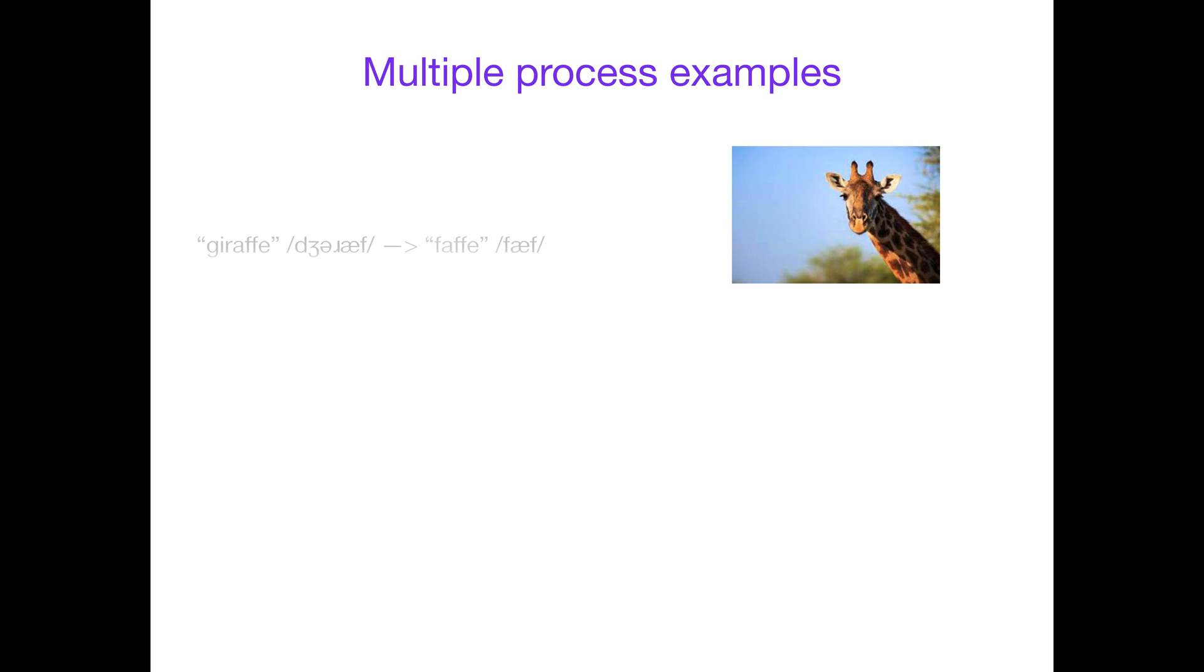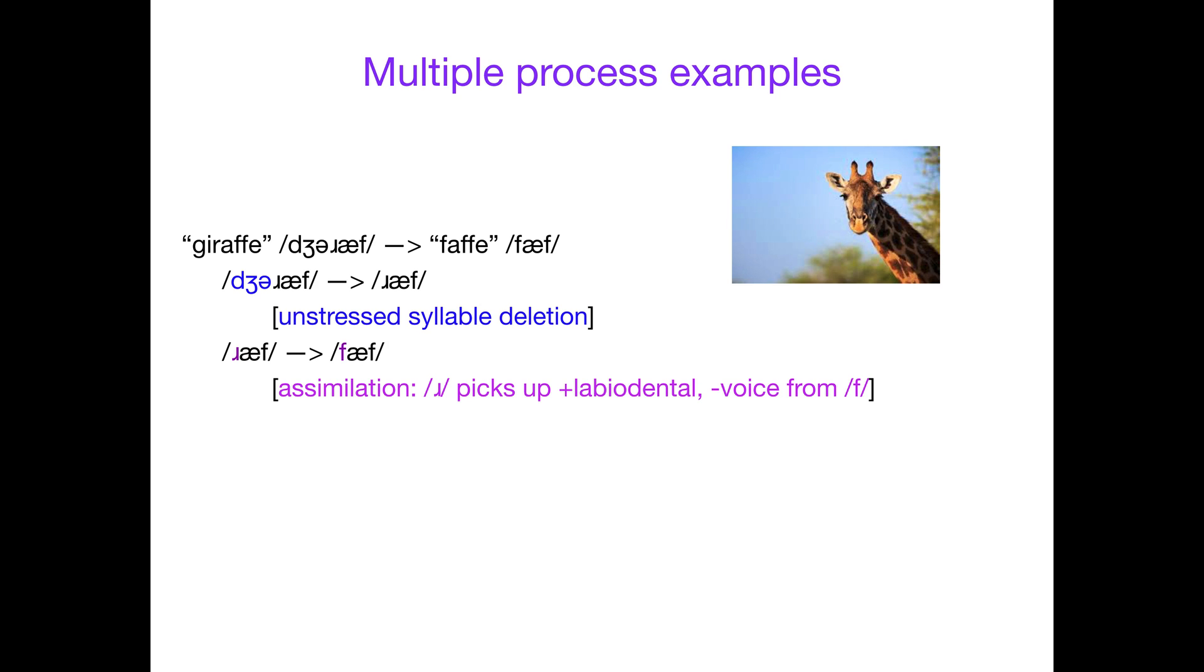We have giraffe. How do we get from giraffe to faf? Something you might notice first of all is that we're down a syllable. We can get from giraffe to raf by deleting that unstressed syllable using unstressed syllable deletion. Then we need to get from raf to faf. It's a liquid, and it's voiced, and it's alveolar. Faf is a fricative, so we're changing that. It's voiceless, so we're changing that. And it's labiodental, so it's changing that. Really picking up the F features, the labiodental voiceless fricative. We have to pick them up from somewhere, and the answer is from the other F. It's actually labiodental, minus voice, and fricative in this case because R is a liquid.